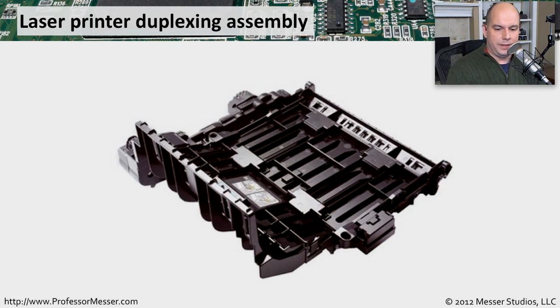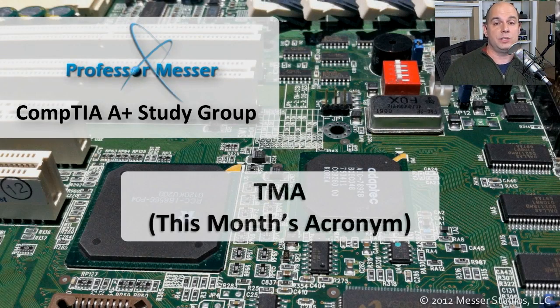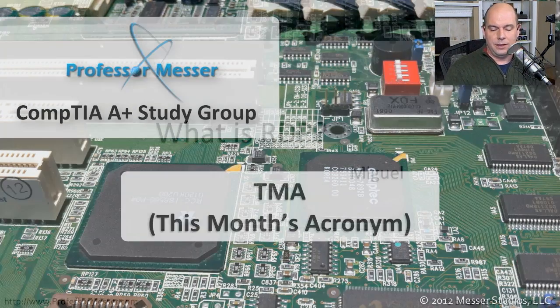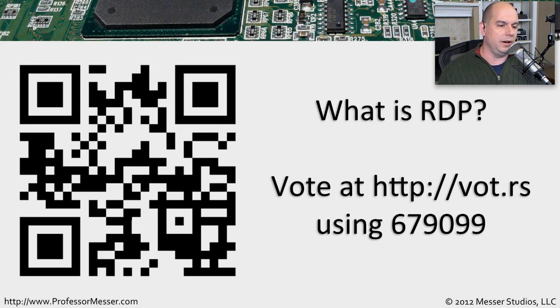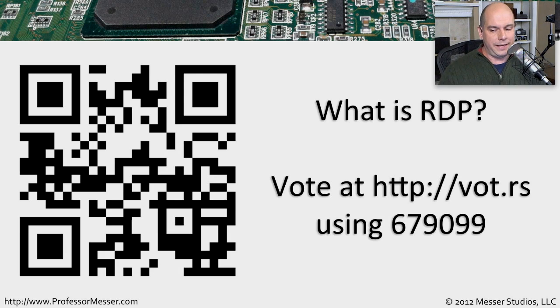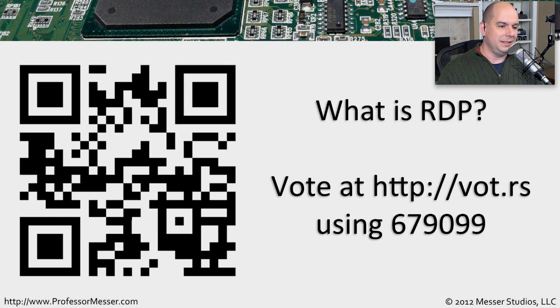Let's look at this month's acronym — TMA. This month's acronym is RDP. Don't say it in the chat room. Go to vote.rs and use the number 679099, or snap a QR code. We want to see what you think RDP stands for. Let me switch over to that page so we can all see the results.